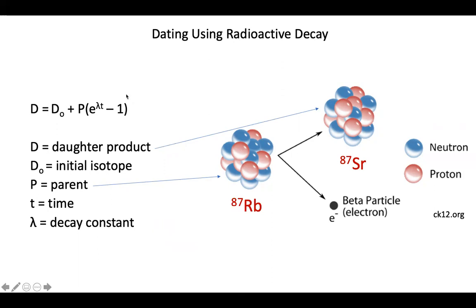The equation I will be using is as follows: D is the daughter product, in this case strontium-87. D0 is the initial amount of isotope that we see in a rock. P is the parent element, or rubidium. T is time. And lambda is the decay constant, or how fast the parent decays into the daughter element.